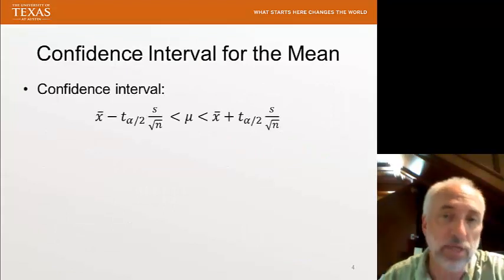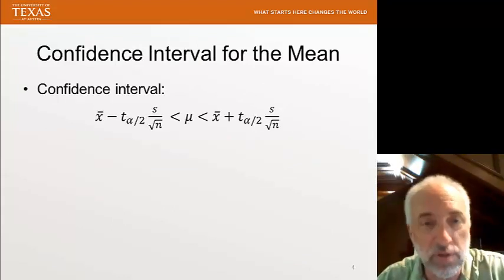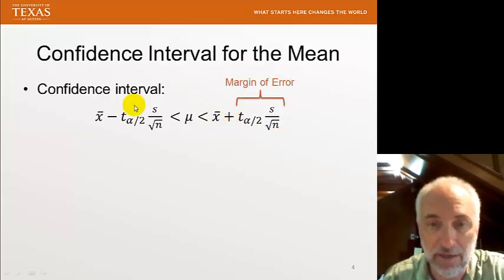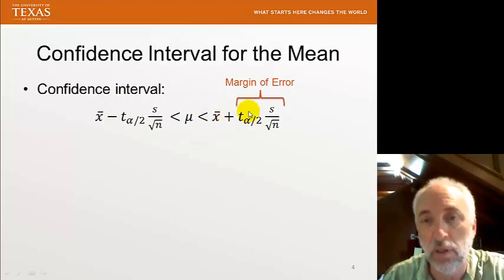As we've seen before, we can create a confidence interval for the mean. If I have my mean, mu, I create a confidence interval, an x-bar plus a margin of error and an x-bar minus a margin of error, where x-bar is my point estimate from this particular sample.